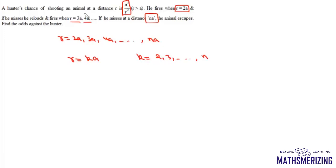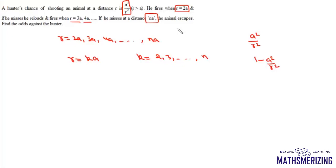The hunter's chance of shooting an animal at a distance r is a²/r², and his chance of not hitting the animal will be 1 minus a²/r². We will find the probability that the hunter doesn't hit the target and the animal escapes.